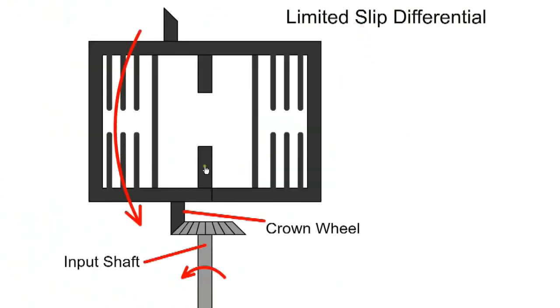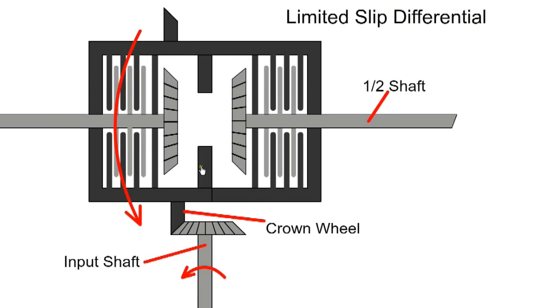Another option is the Limited Slip Differential, LSD. They allow for a difference in speed when cornering, but limit slip during low traction conditions.